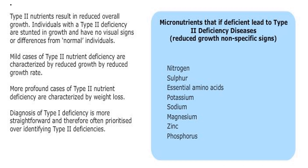The most common type 2 nutrients are nitrogen, sulfur, essential amino acids, potassium, sodium, zinc, magnesium, and phosphorus. Their deficiency does not cause specific symptoms, unlike that of type 1 deficiency.